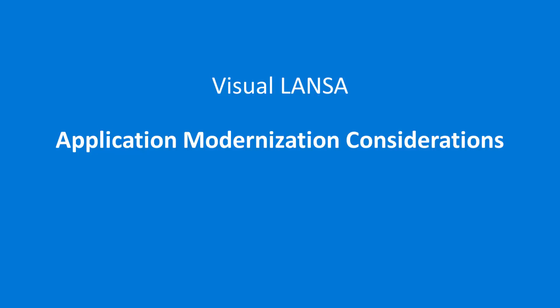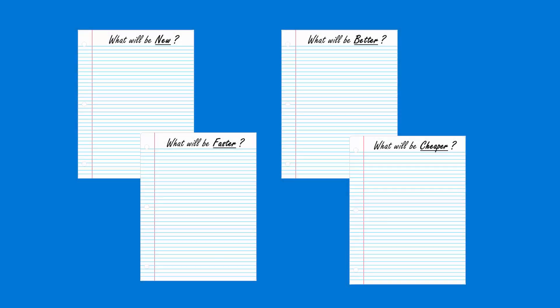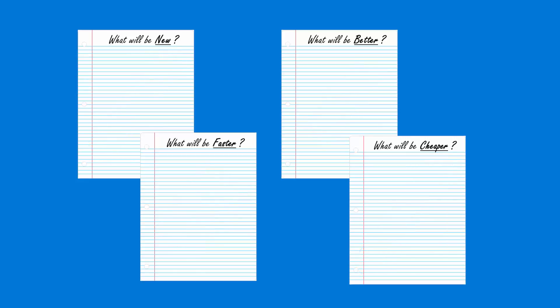Welcome to another video about Visual Lancer. This video is part two of three videos discussing IBMI application modernization. Part one discussed four lists that are often viewed by others in your organization from different perspectives. It also suggested that the new business value defined on these lists was your modernization project's critical success factor. This presentation is about some of the things you might be able to add to those lists.